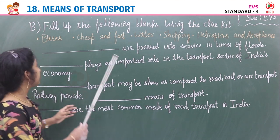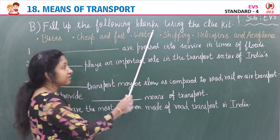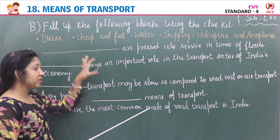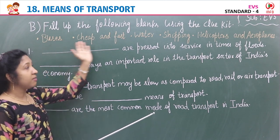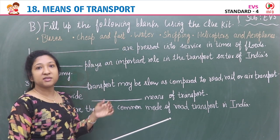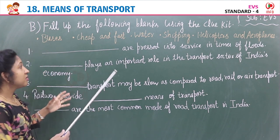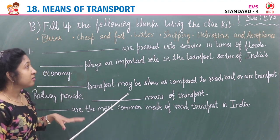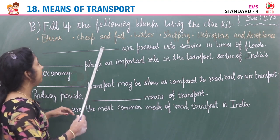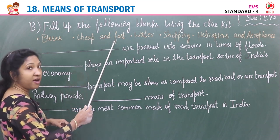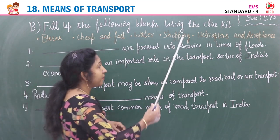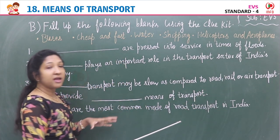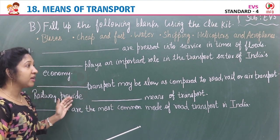Next exercise is Exercise B: Fill in the blanks using the clue kit. The words in the clue kit are: buses, cheap and fast, water, shipping, helicopters, and aeroplanes. Using these words you have to fill each blank.